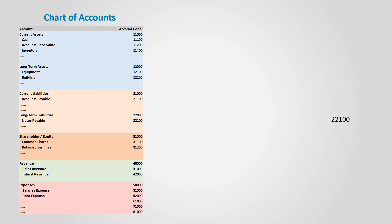The same thing applies to long-term liabilities. It starts with two for liabilities and another two for long-term liabilities. Let's say notes payable is the first account, so it takes one to be two-two-one, then we add zero-zero. We can then add 99 notes payable accounts. If we need more, we can add another digit to the right so that we can accommodate up to 999 notes payable accounts.